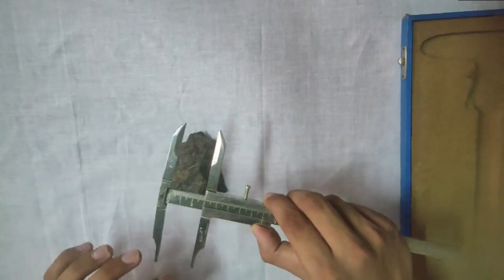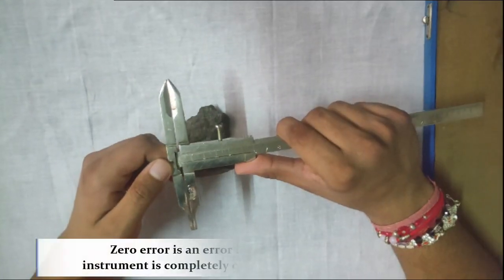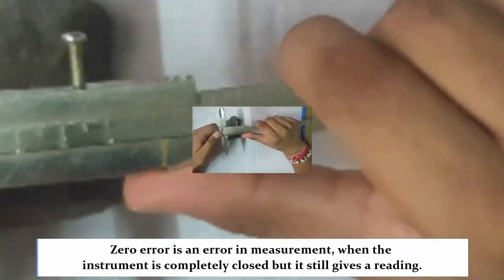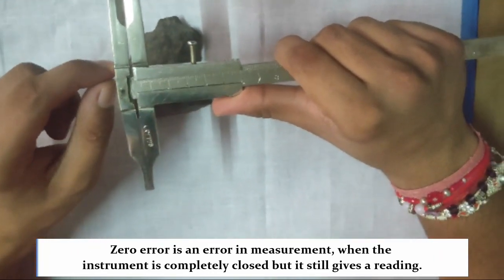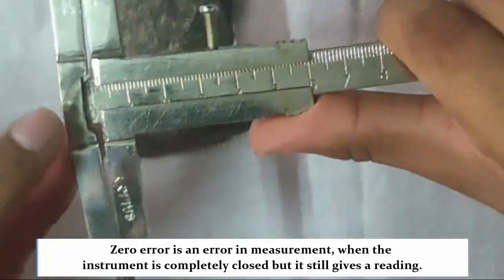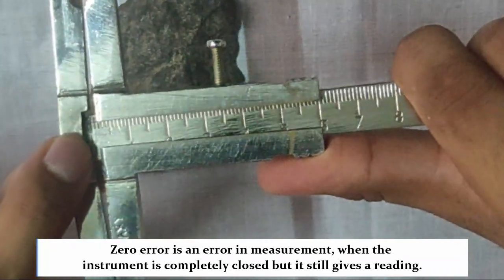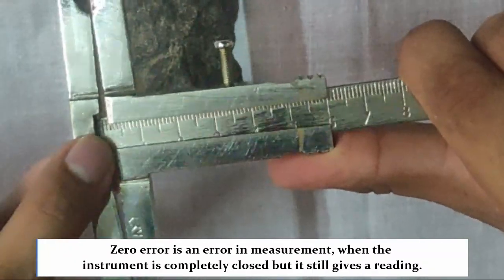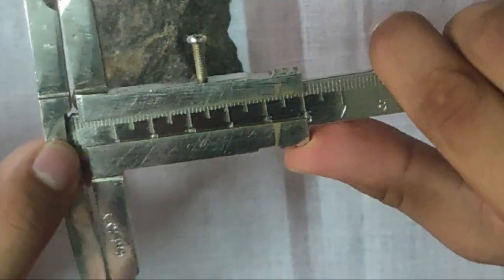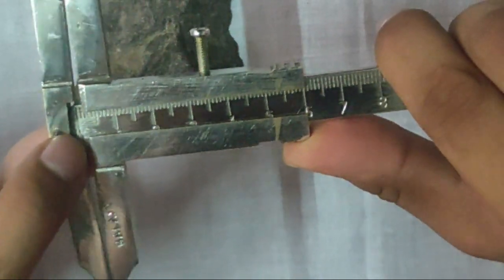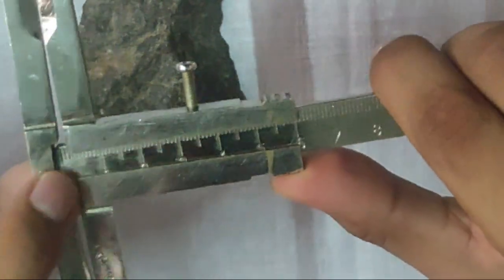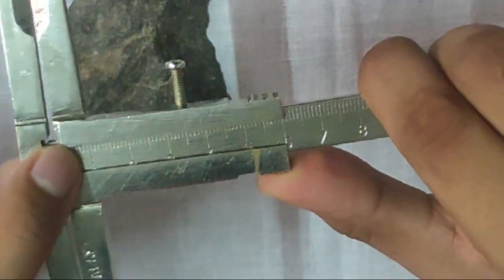The first step is to find the zero error. You can see that on this particular scale, when we completely close our scale, we don't get zero as our reading but it shows us a reading of 2mm. Hence, the scale has a zero error of 2mm and every measurement taken by the scale will be 2mm more than the actual value.